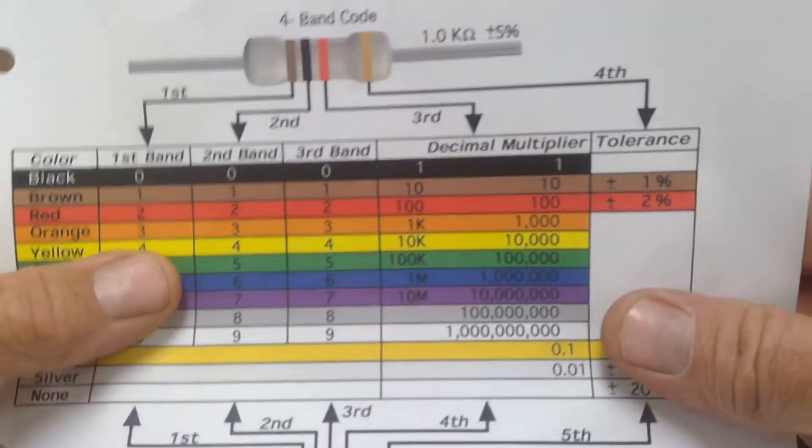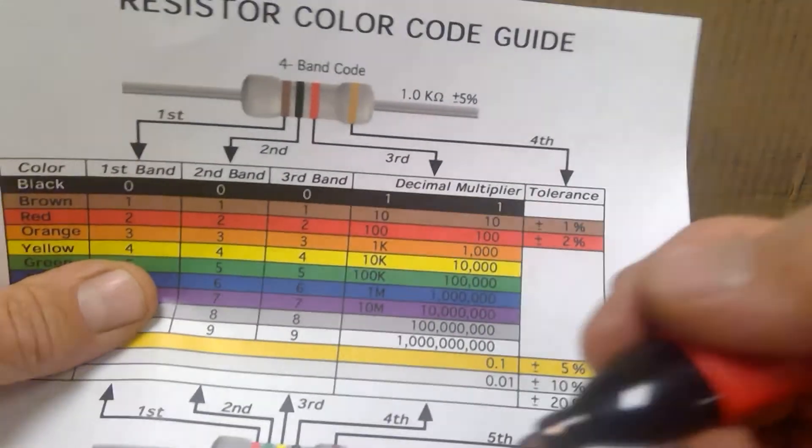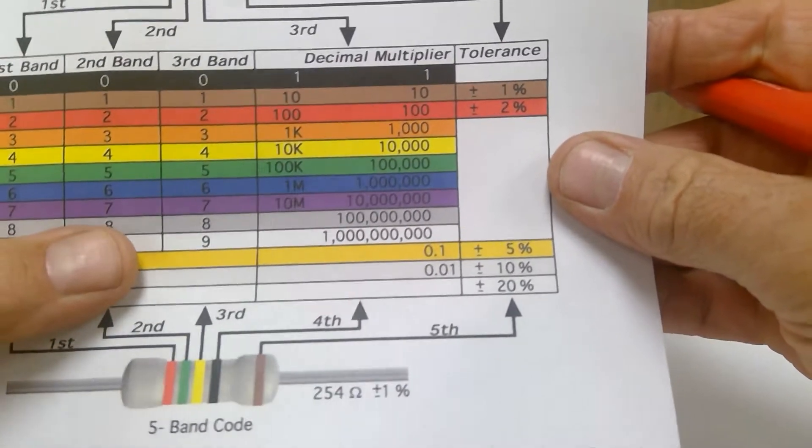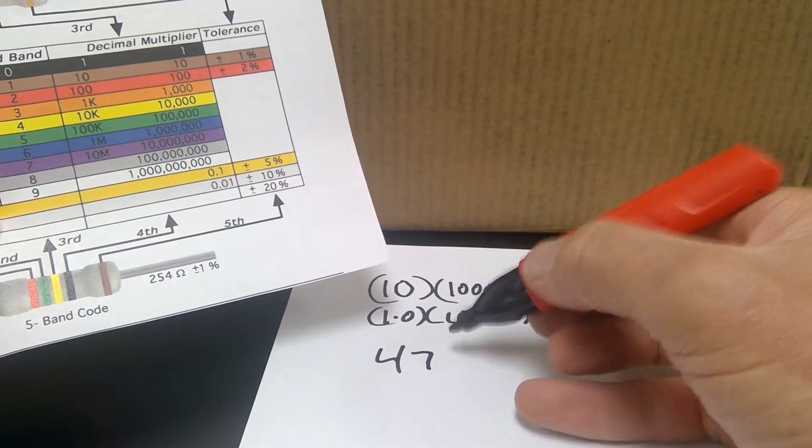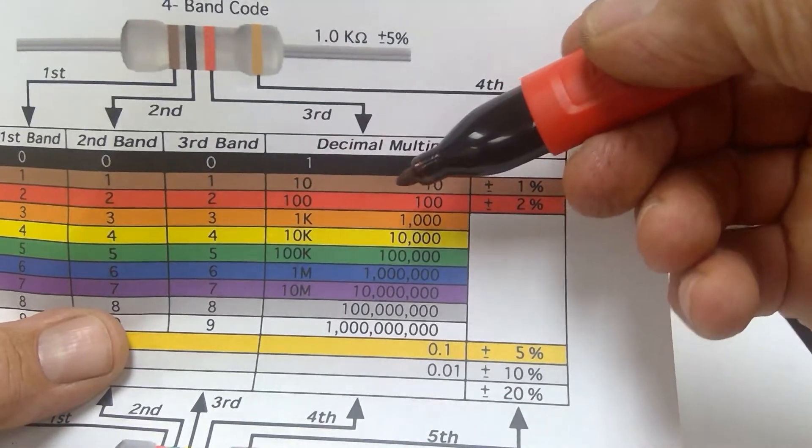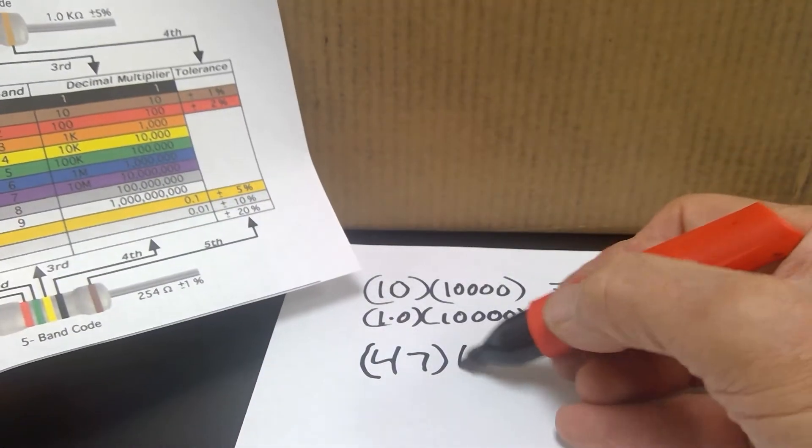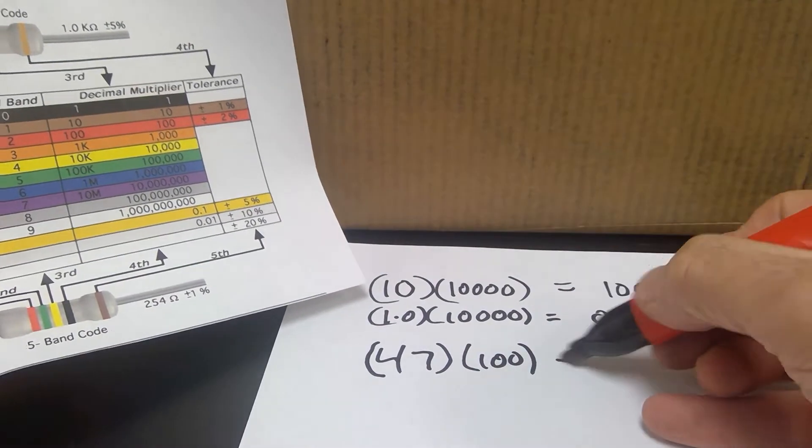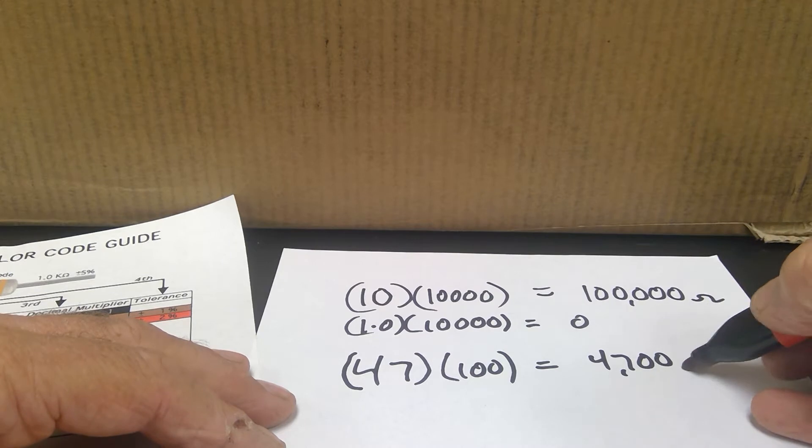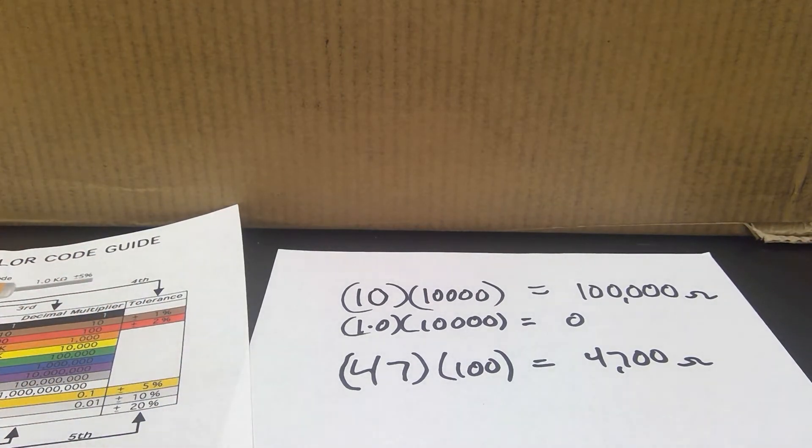So the first band was yellow, so that's the number four. I'll write that down. The second band was violet. That's the number seven. I'll write that down. So that's the number 47. And the third band was red, which is the number 100. Write that down. And that means that I've got a 4,700-ohm resistor. Pretty straightforward. This is not magic by any stretch of the imagination.